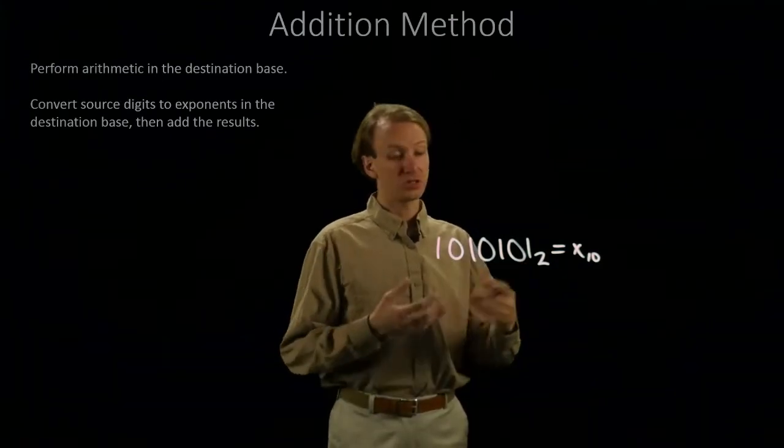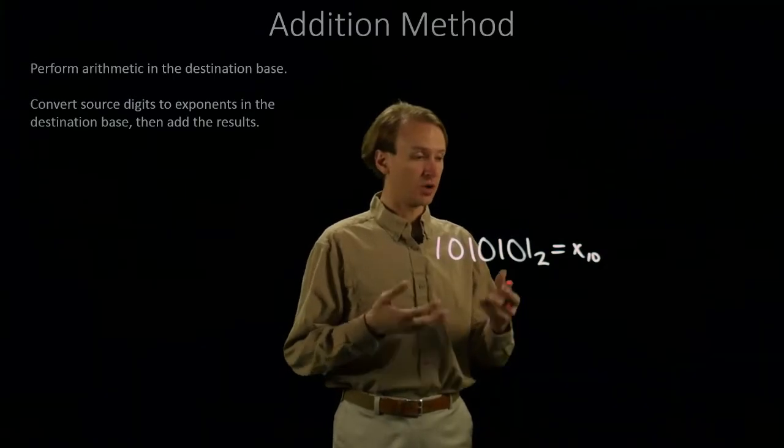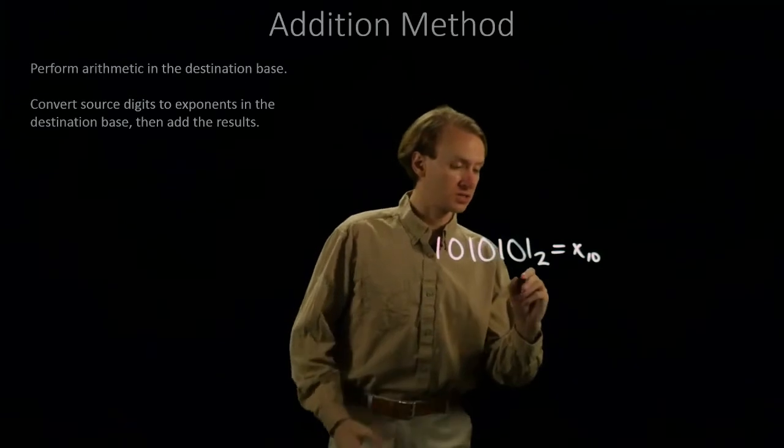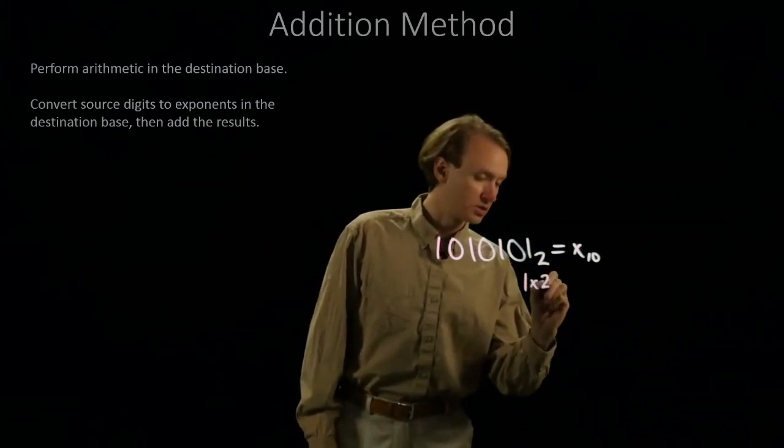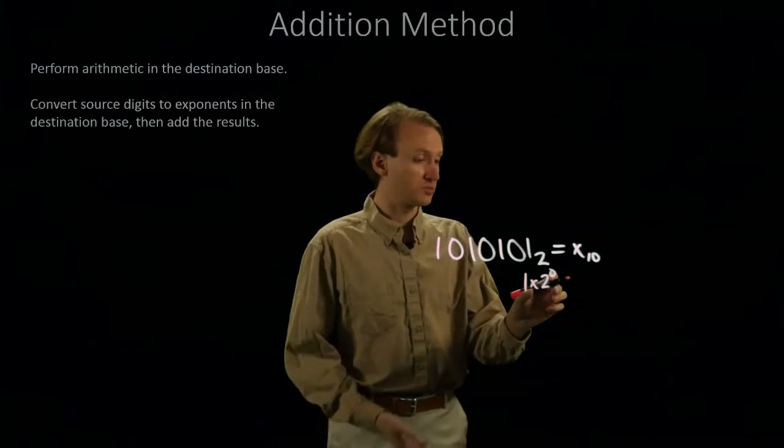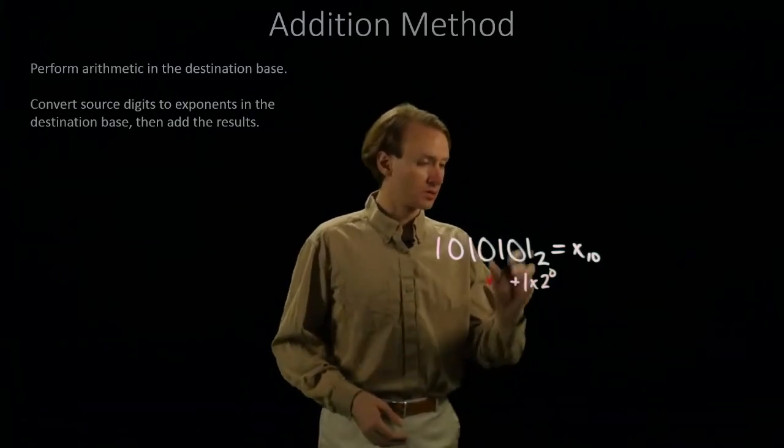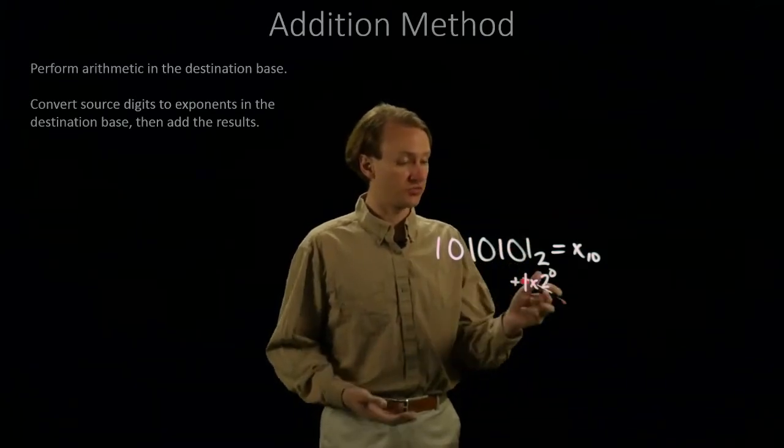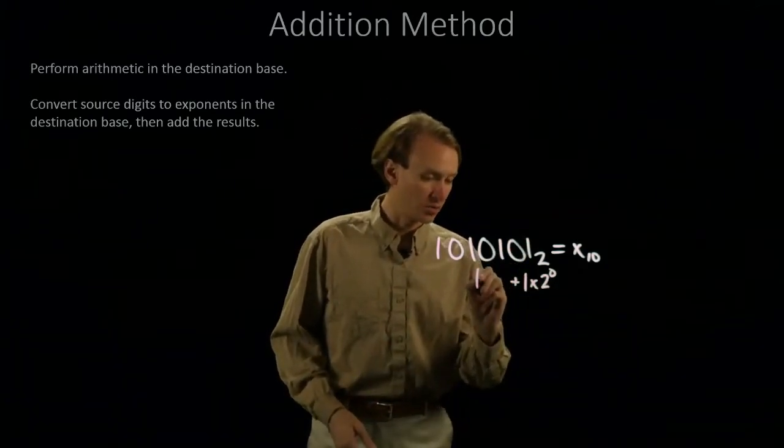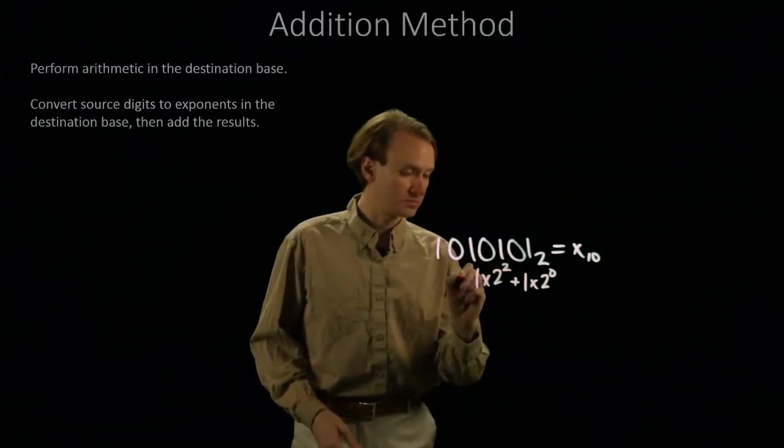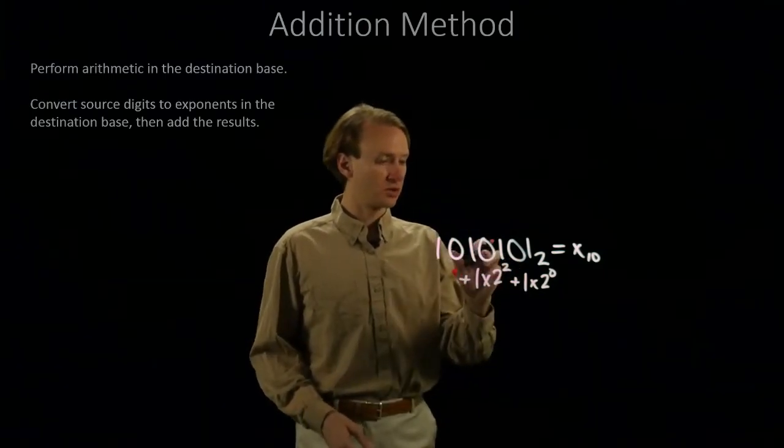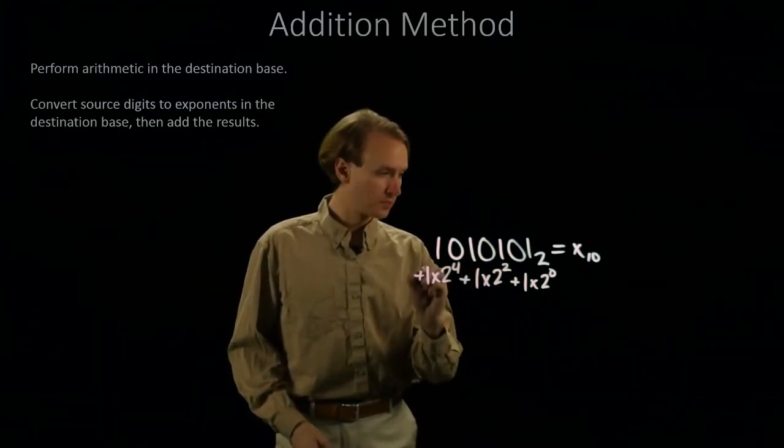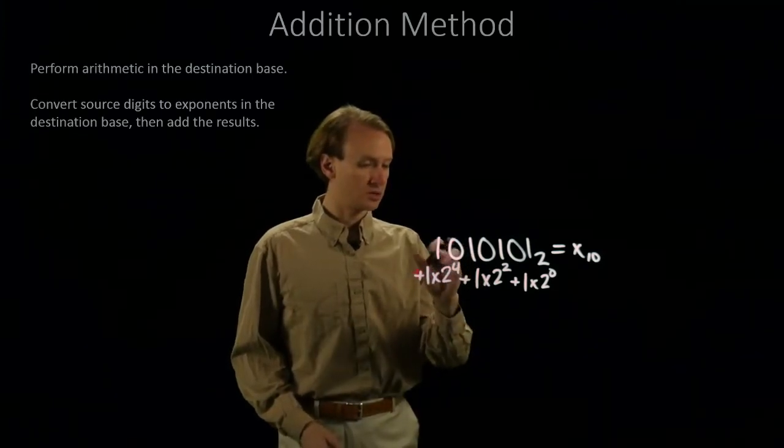If you're not quite so familiar with the exponents of base 2, you're probably going to want to write some of this out and then do the addition. So I know that this is 1 times 2 to the 0 or just plain 1. This would be 2 to the 1st or 2. This is 2 squared which is 4, so I have 1 times 2 squared, 2 to the 3rd, 2 to the 4th, and then 2 to the 6th.